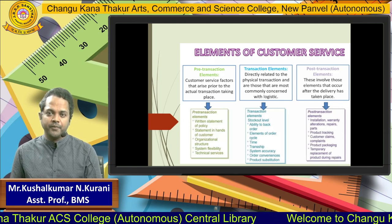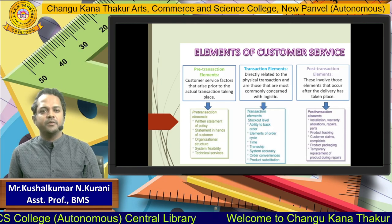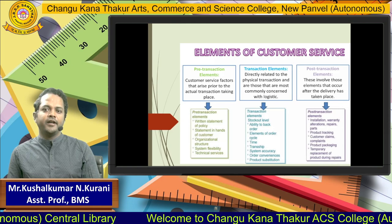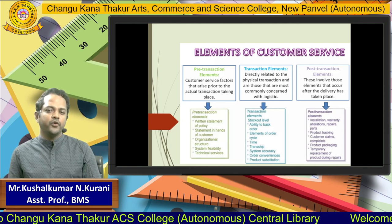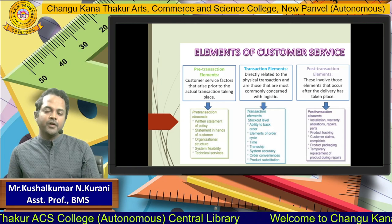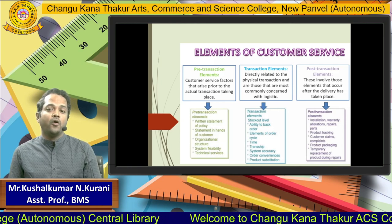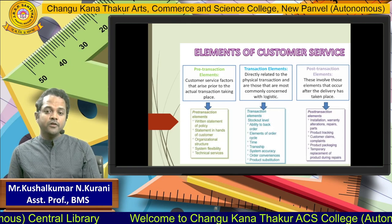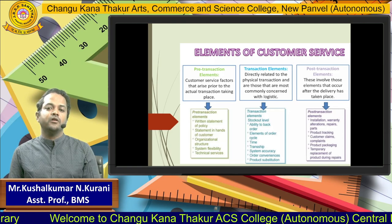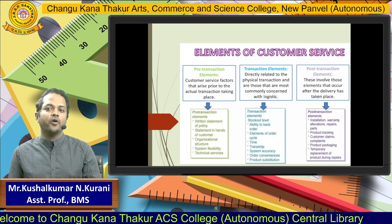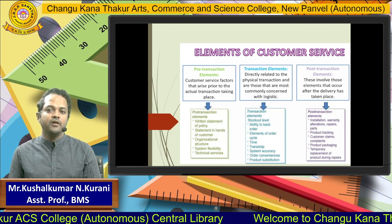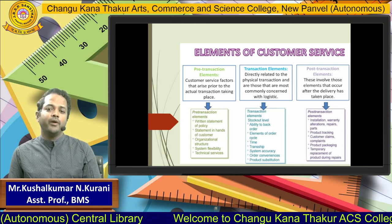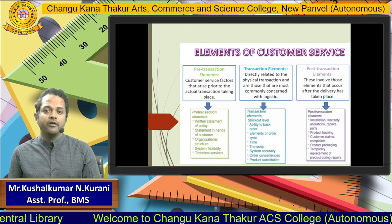Other than this, there is also a concept known as product loaning. For example, when a customer buys a new mobile phone and there is a technical problem, the customer goes to customer service and may be asked to deposit the phone for a few days to fix the problem. The company has to provide an alternate phone to the customer because for 10 to 15 days the customer cannot stay without a mobile phone. The company gives an alternate mobile phone until the original is fixed and returned.